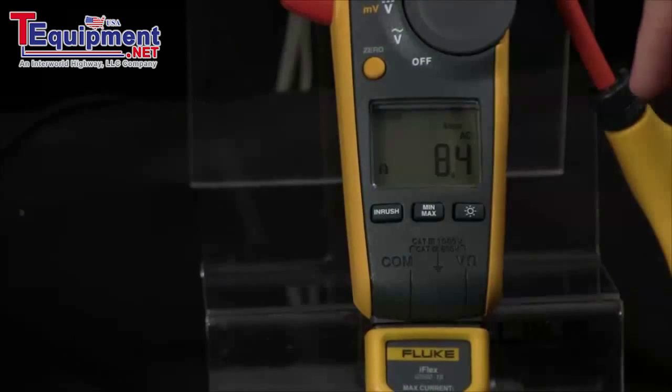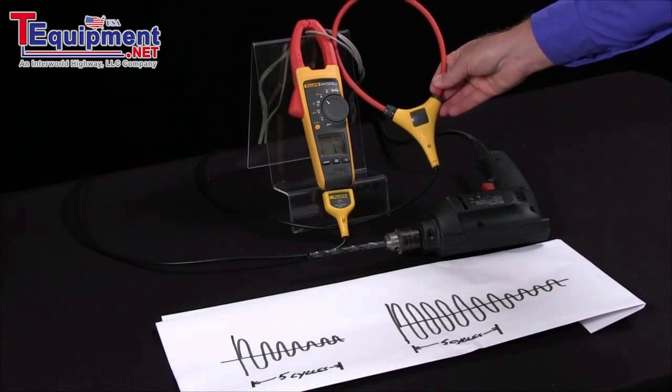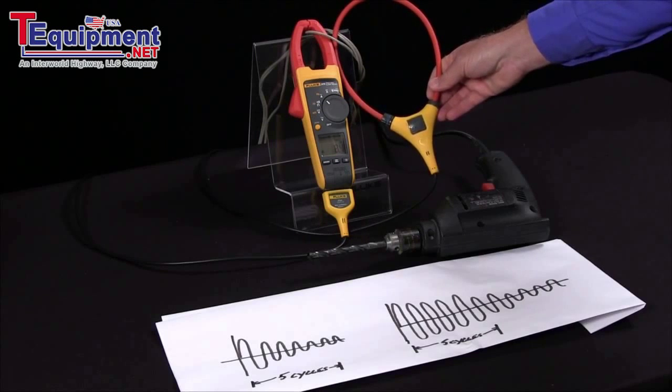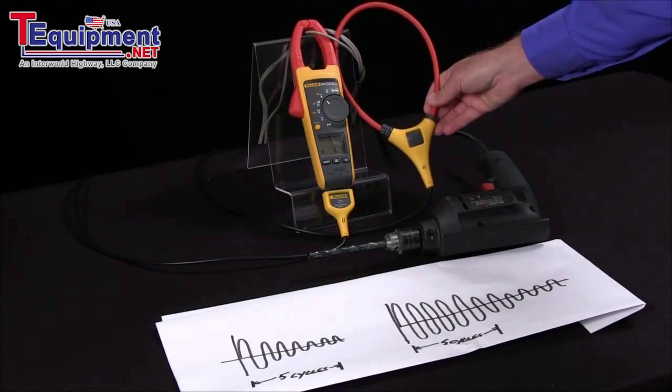This also works with the Fluke iFlex, which is a very handy adapter to get you into tight spaces. If you have cables that are tie wrapped together, you don't have to cut the cables.